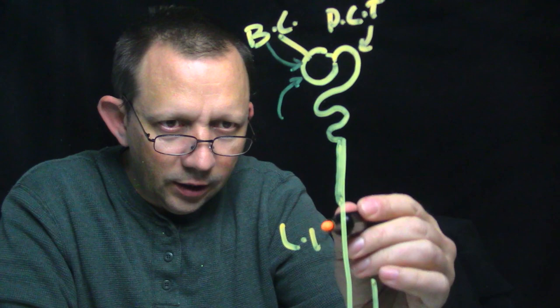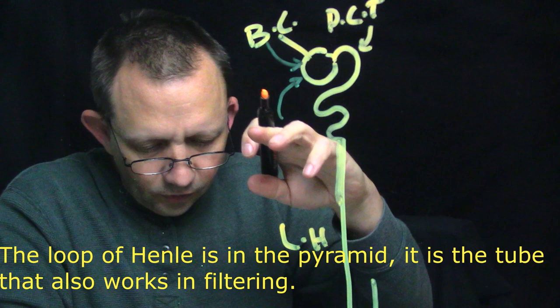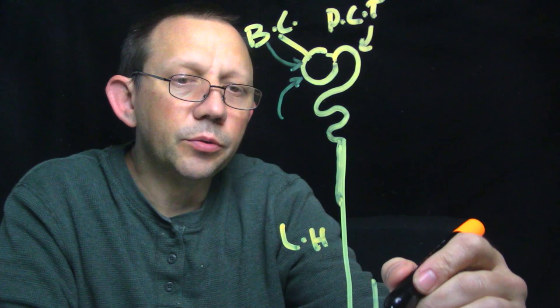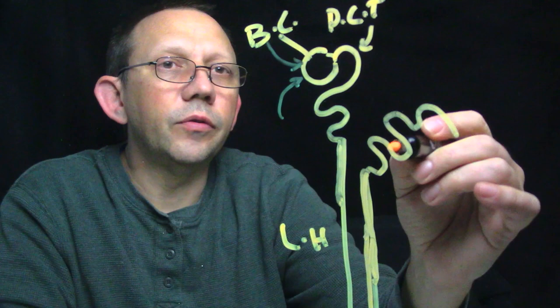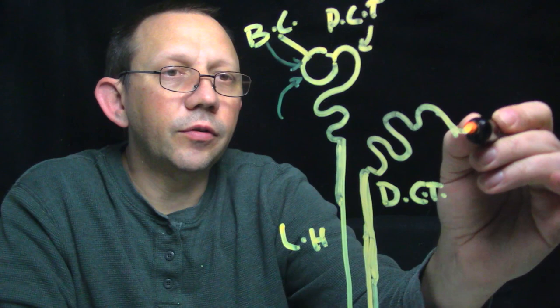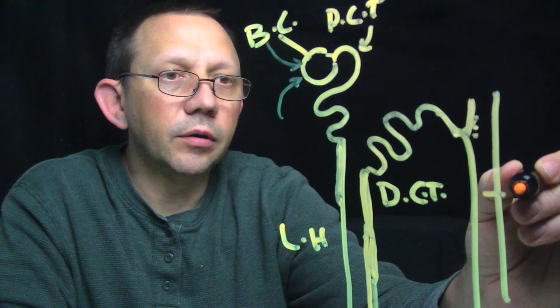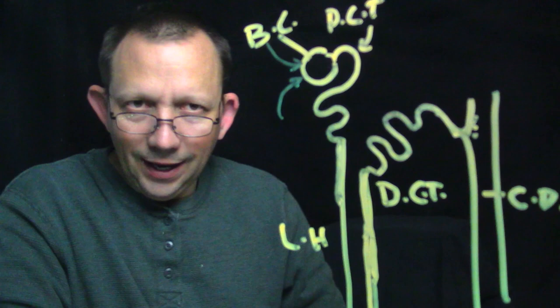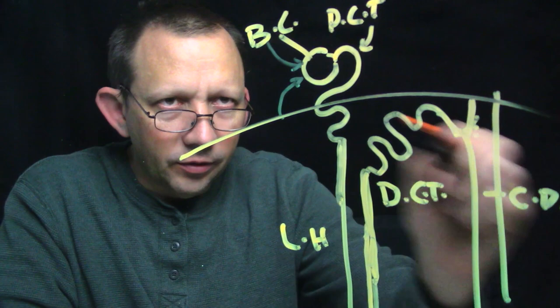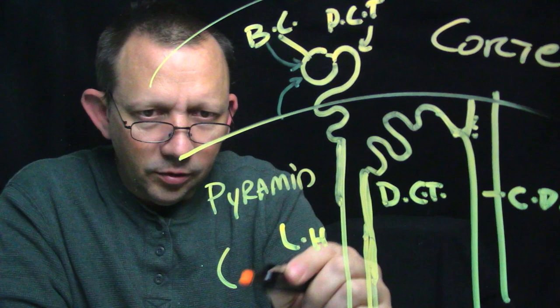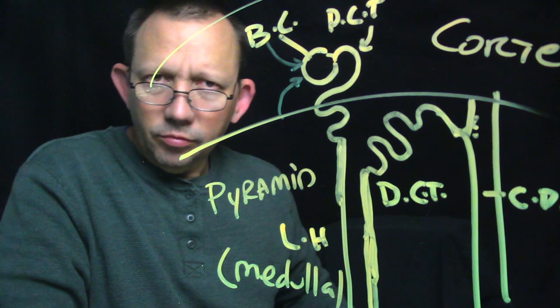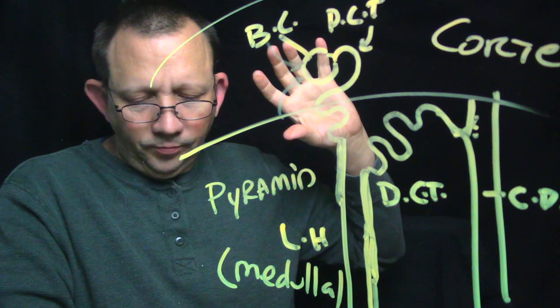Down here is the loop of Henle — it loops around, gets narrower, then widens at the base and goes back up. Then it squiggles around again — this is called the distal convoluted tubule — and it attaches to the collecting duct all the way down. That's where you have urine start. This whole thing: Bowman's capsule is up in the cortex — this is cortex land — and the loop of Henle is down in the pyramids, which we also call the medulla — medulla land.